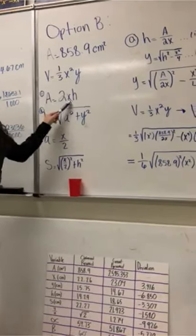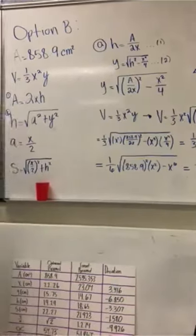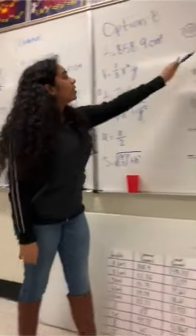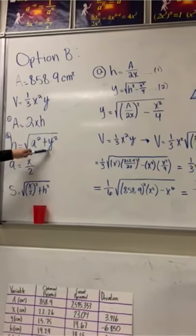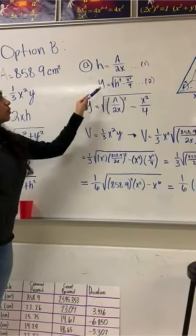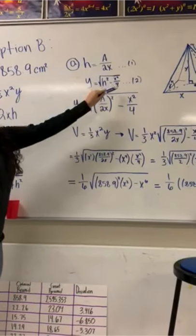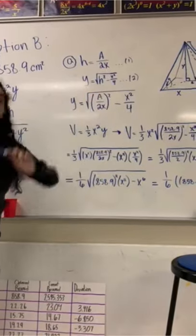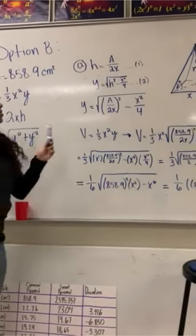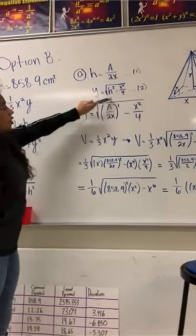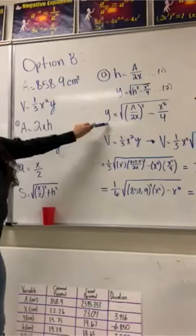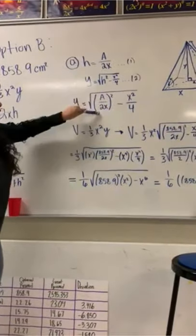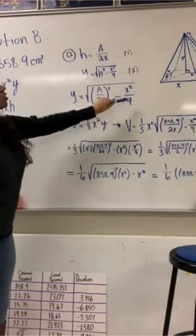We transitioned from A = 2xh to h = A over 2x — that was the first formula. For the second formula, h = the square root of the apothem squared plus y squared ultimately turned out to be y = the square root of h squared minus x squared over 4. Using these two formulas, we plugged h into the y formula, ending up with y = the square root of (A over 2x) squared minus x squared over 4.